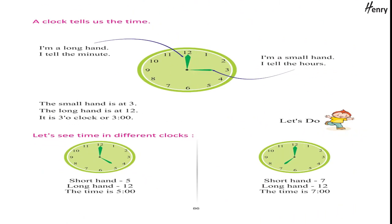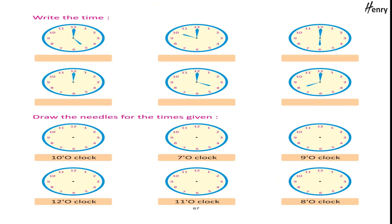A clock tells us the time. I am a long hand — I tell the minutes. I am a short hand — I tell the hours. The small hand is at 3 and the long hand is at 12 — it is 3 o'clock. Let's do: see the time in different clocks. Short hand 5, long hand 12 — the time is 5 o'clock. Short hand 7, long hand 12 — the time is 7 o'clock. Write the time. Draw the needles for the times given.